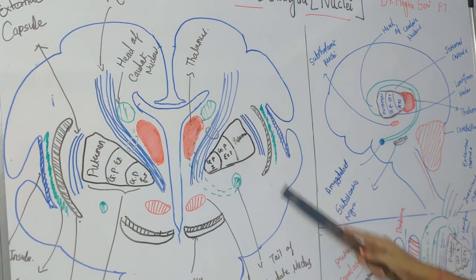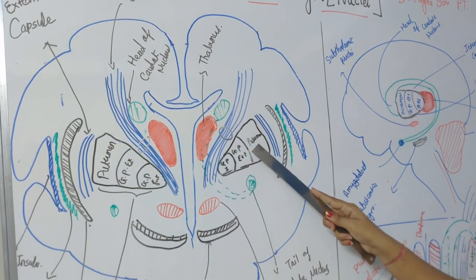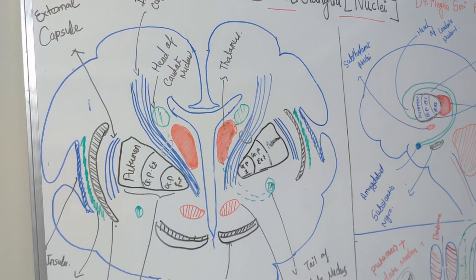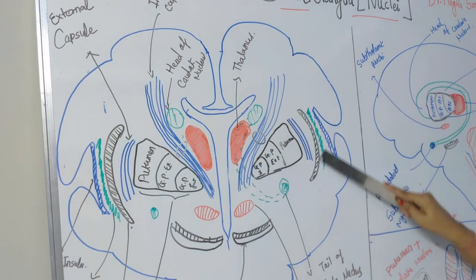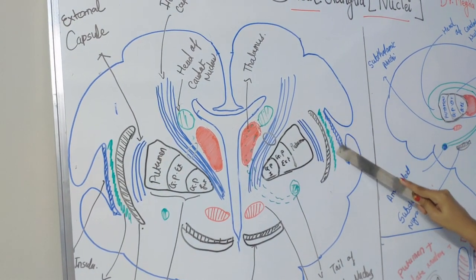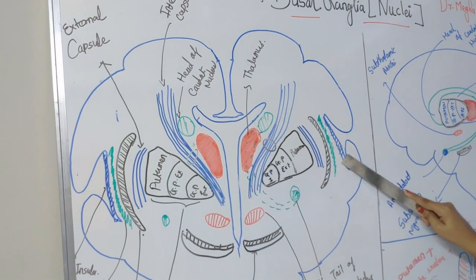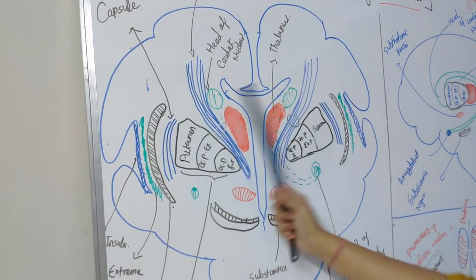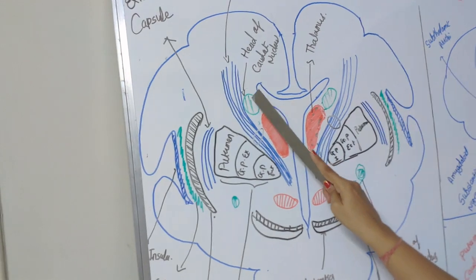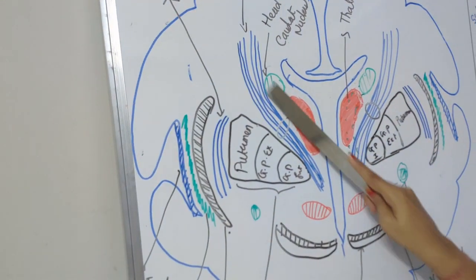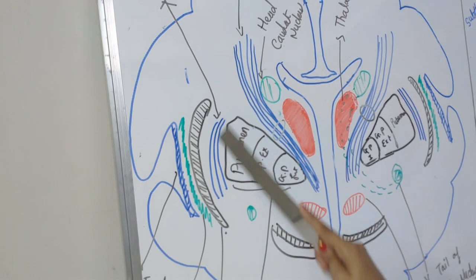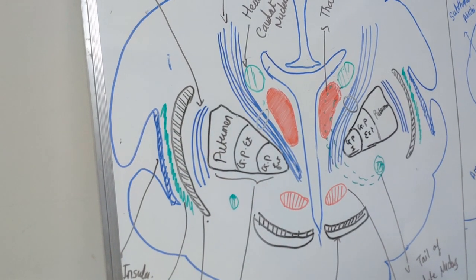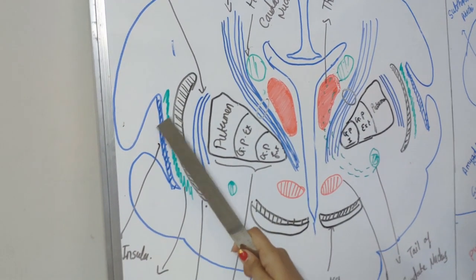The Internal Capsule is situated medial to Lentiform Nucleus, and the External Capsule is situated lateral to Lentiform Nucleus. Lateral to External Capsule is the Claustrum, surrounded by the Extreme Capsule, and then the Insular Cortex. This same structure is present on both sides: thalamus, head of Caudate Nucleus, Internal Capsule, Lentiform Nucleus, External Capsule, Claustrum, Extreme Capsule, and Insular Cortex.